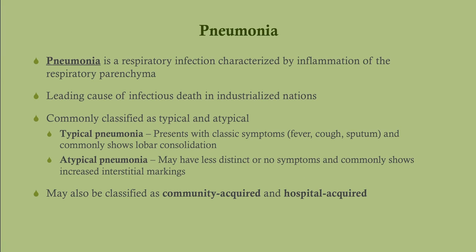Typical pneumonia presents with the classic triad of fever, cough, and increased sputum, and it commonly shows a lobar consolidation on chest x-ray. Atypical pneumonia may have less distinct or no symptoms — like walking pneumonia — or it may have a chest x-ray out of proportion to symptoms, showing increased interstitial markings rather than a lobar consolidation.